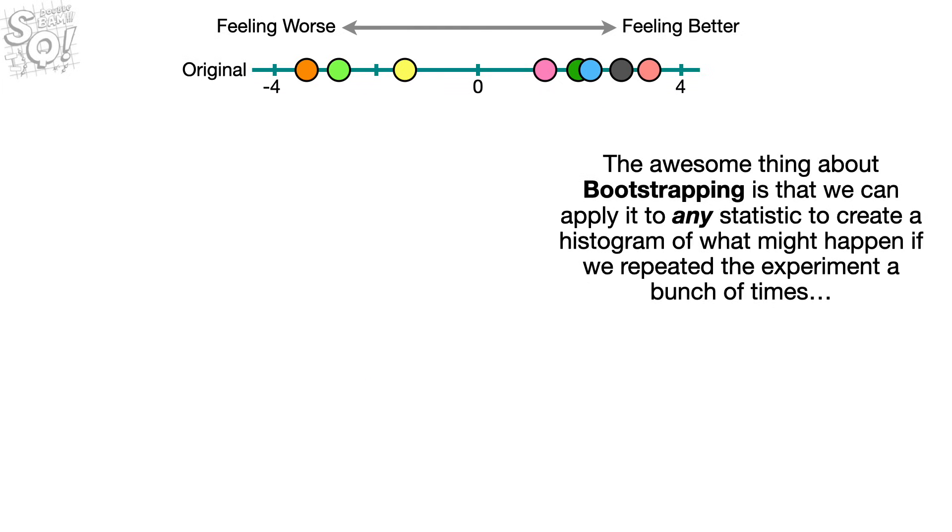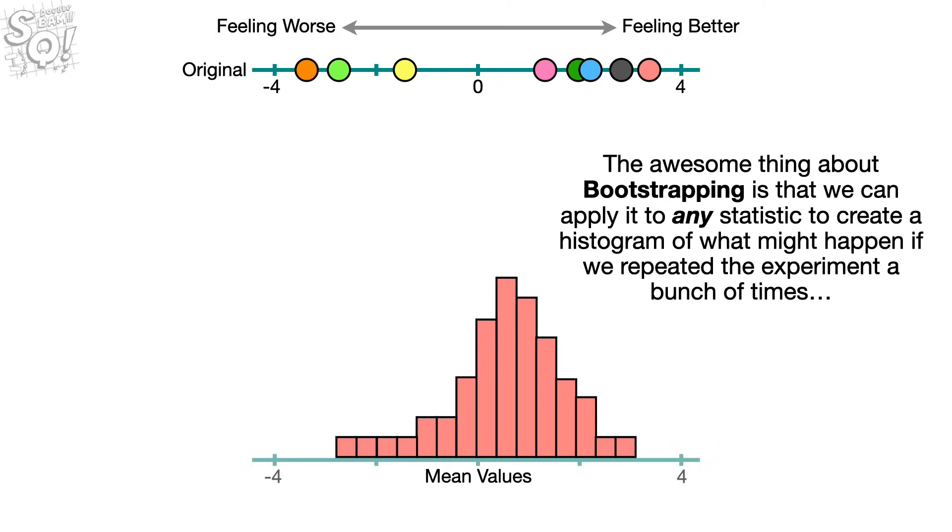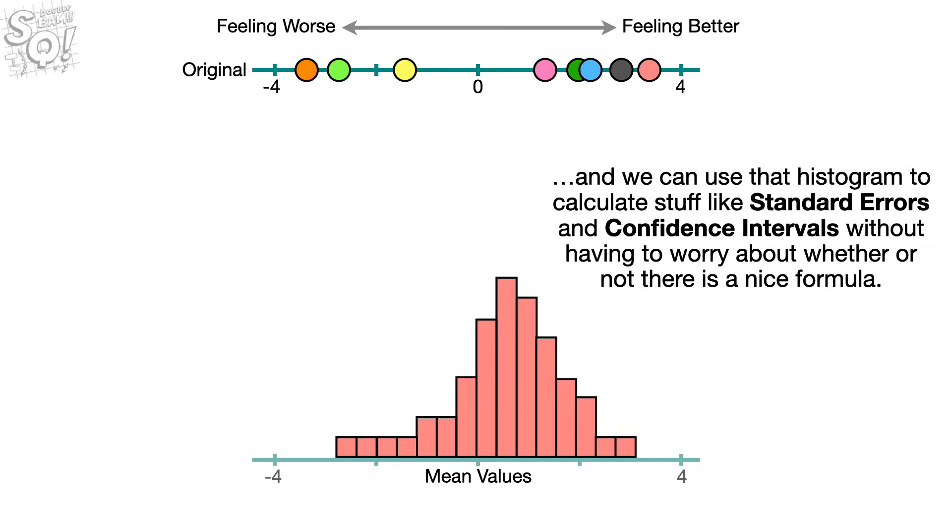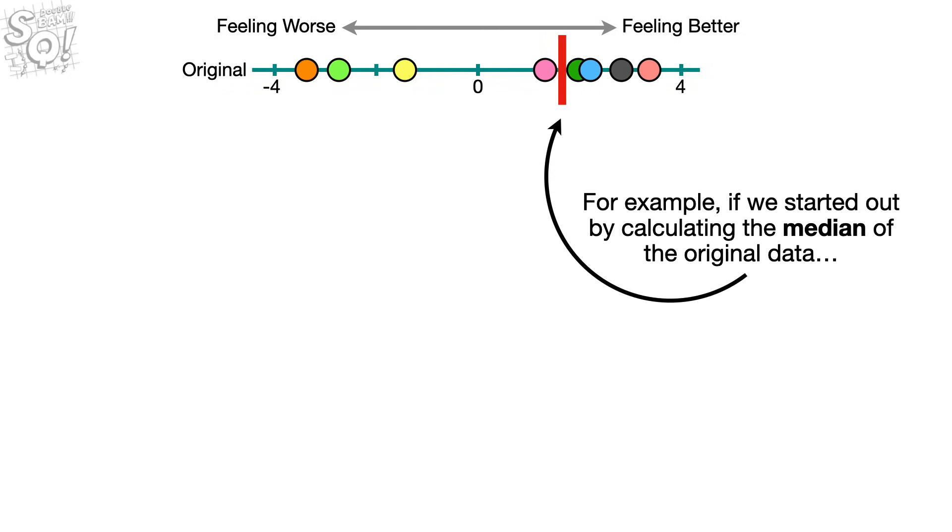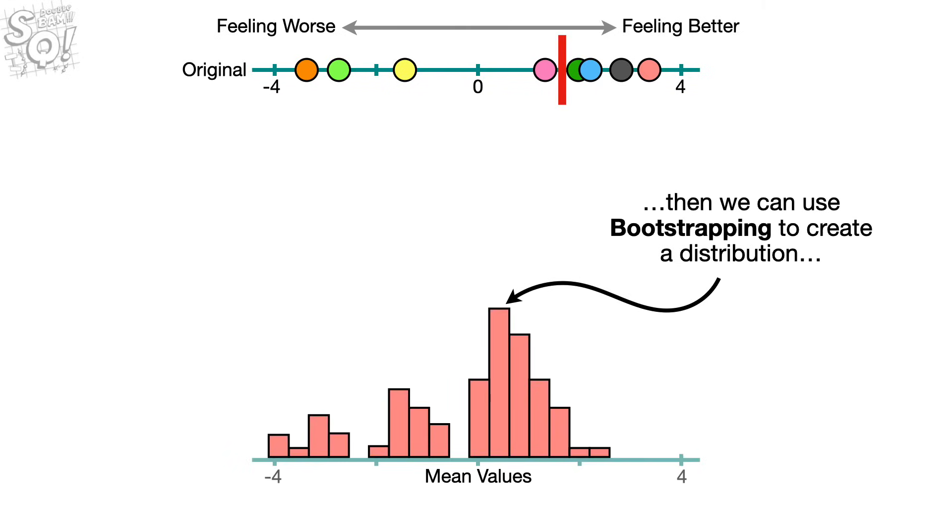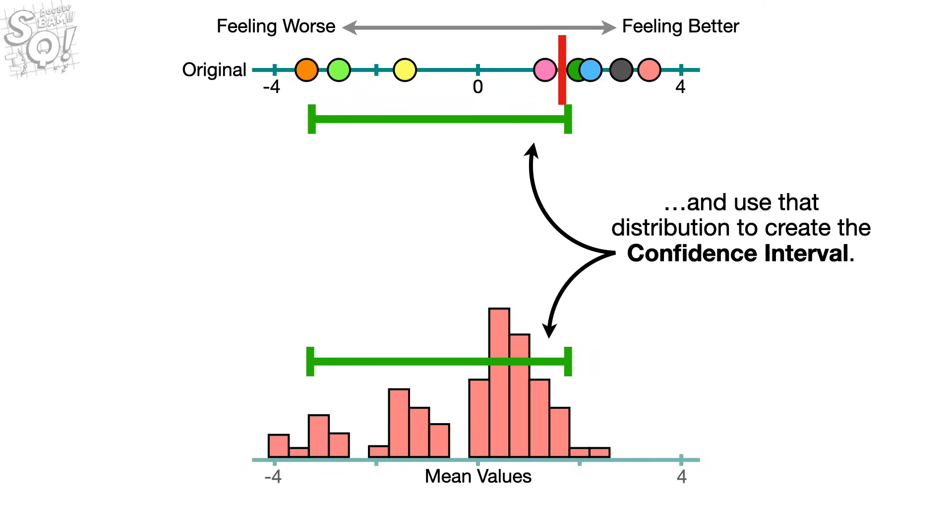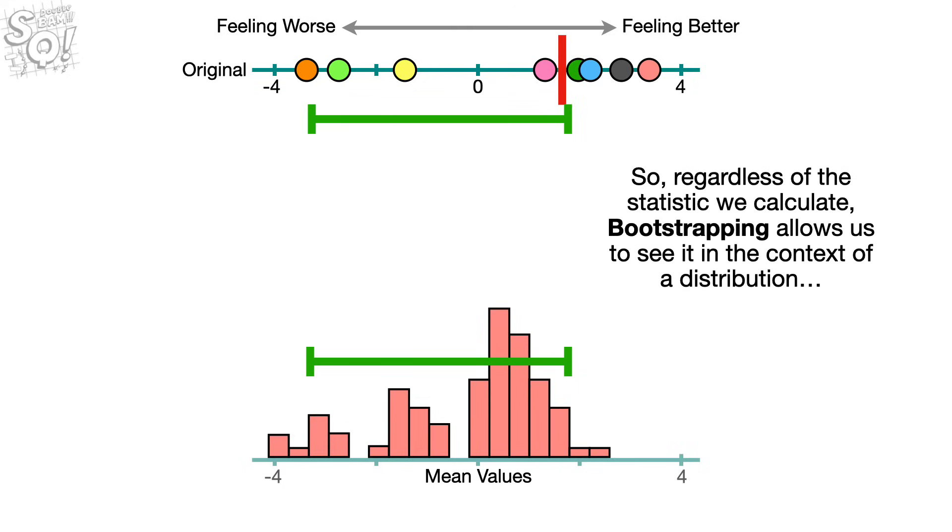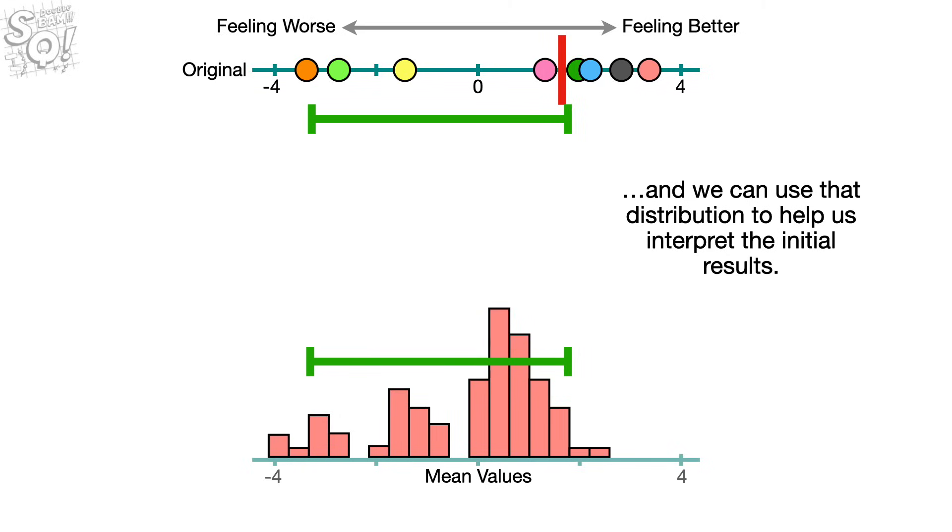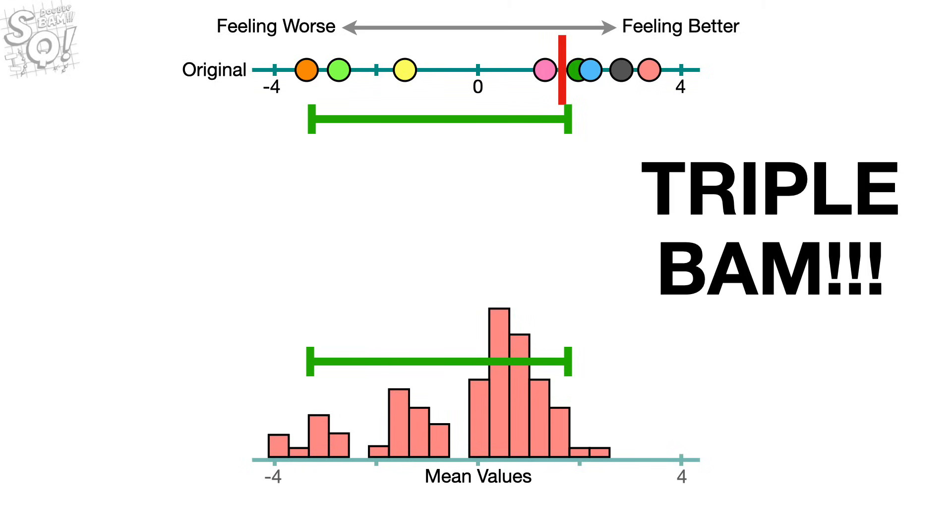The awesome thing about bootstrapping is that we can apply it to any statistic to create a histogram of what might happen if we repeated the experiment a bunch of times. And we can use that histogram to calculate stuff like standard errors and confidence intervals without having to worry about whether or not there is a nice formula. For example, if we started out by calculating the median of the original data, then we can use bootstrapping to create a distribution, and use that distribution to create the confidence interval. So, regardless of the statistic we calculate, bootstrapping allows us to see it in the context of a distribution, and we can use that distribution to help us interpret the initial results. Triple BAM!